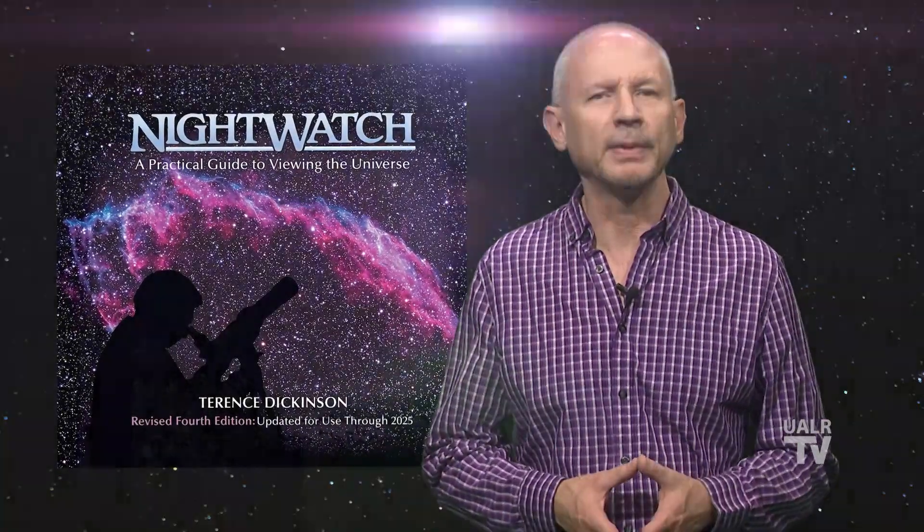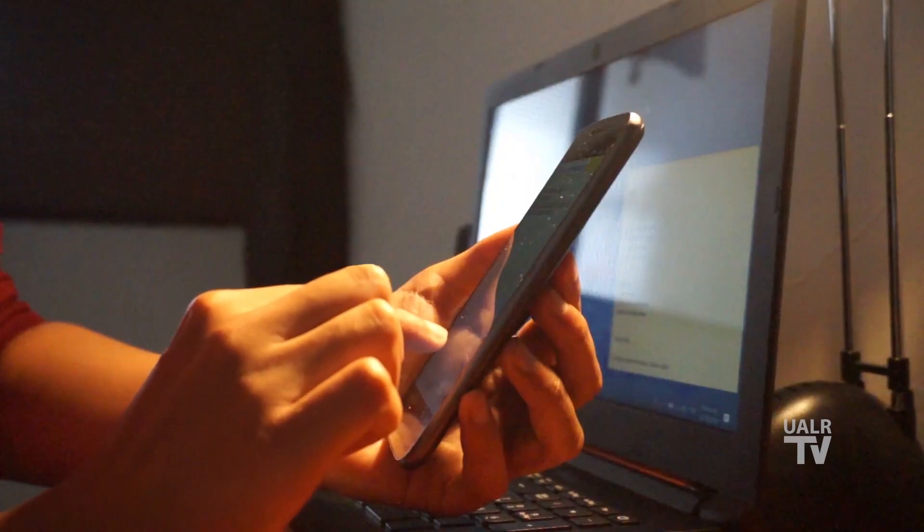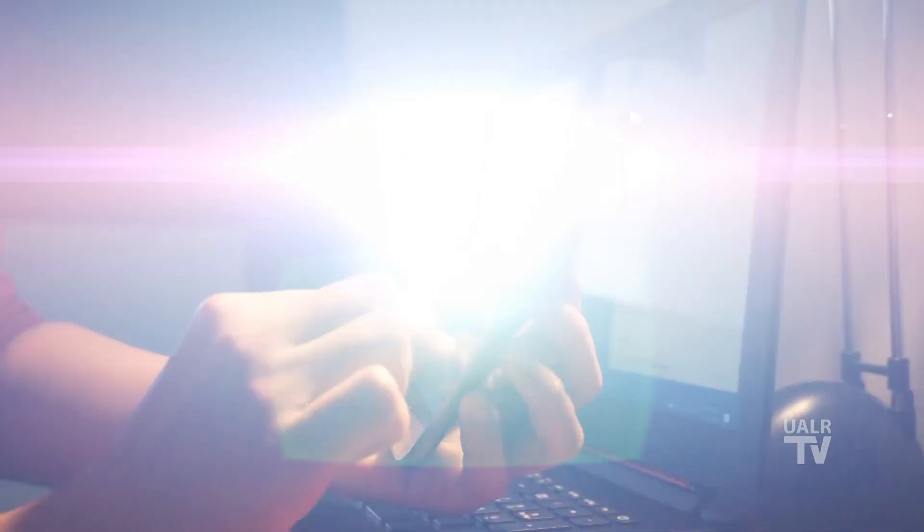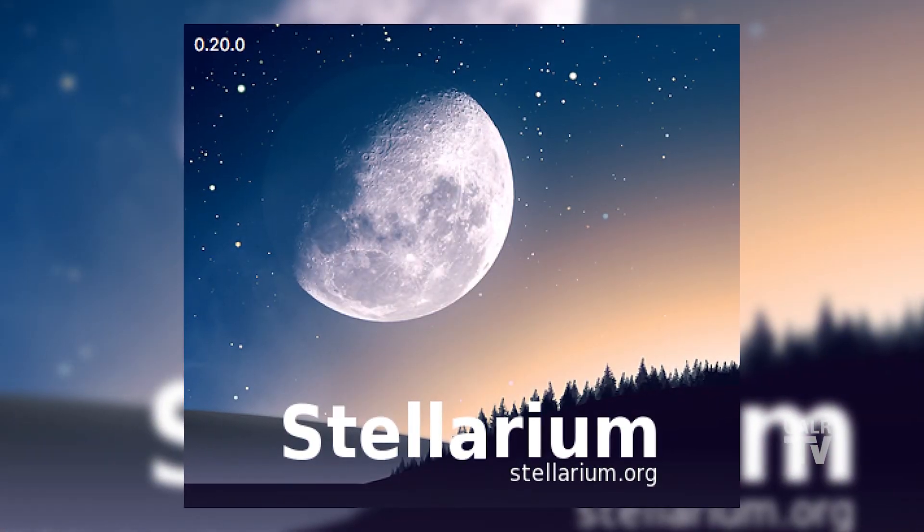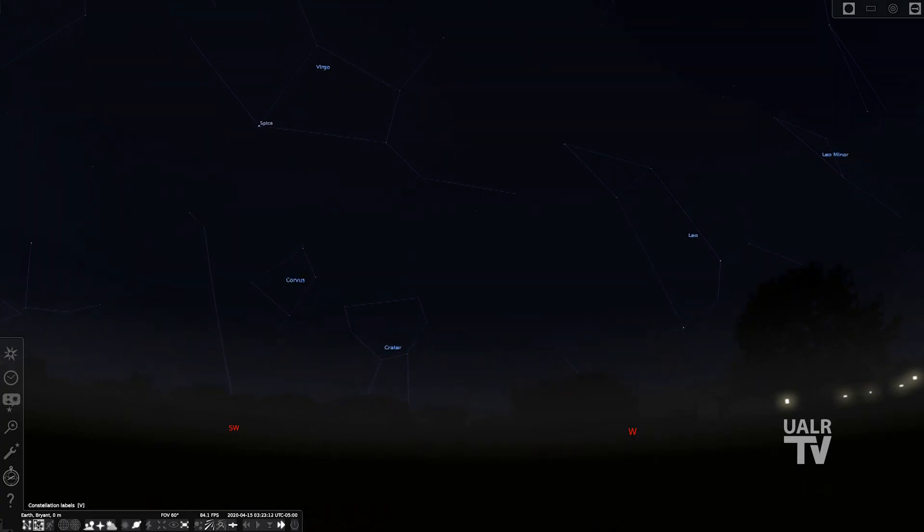Use an astronomy app or software that will show you what's up in your sky, no matter your location. A fantastic, free, open source planetarium software that's available for your computer or smart device is Stellarium, and I highly recommend that you check it out.